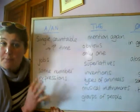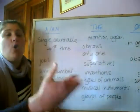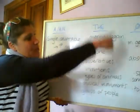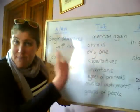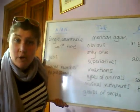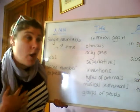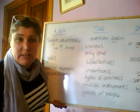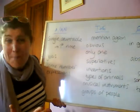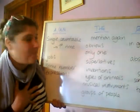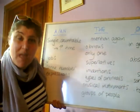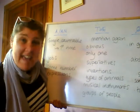We also use 'a' or 'an' with jobs — 'I'm a teacher', 'what's your job? An economist.' We also use 'a' or 'an' with some number expressions, like 'a quarter'. Now we use 'the' for mentioning something again, and also if something is obvious — 'I'm going to the police station', meaning obviously the one closest to me. We use 'the' when there's only one of something: the sun, the King of Spain.